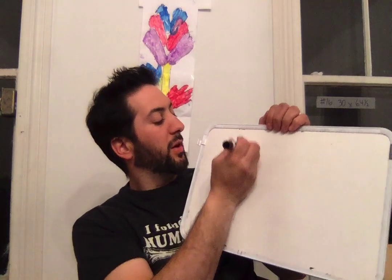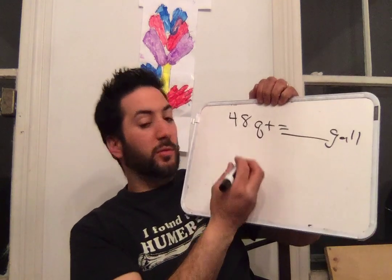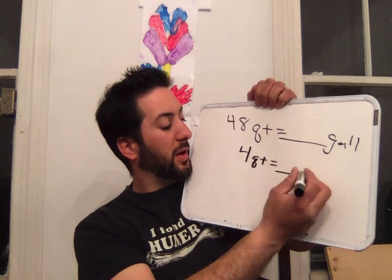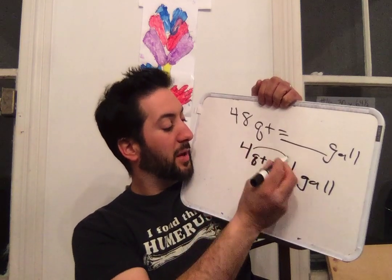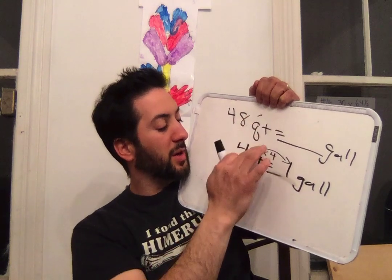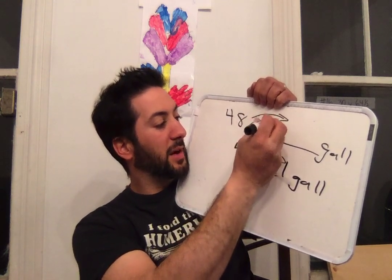Number four: 48 quarts equals blank gallons. This is quarts and gallons — the magic number is four quarts equals one gallon. You have 48 quarts equals blank gallons. Four quarts equals one gallon. How do you get from here to here? You divide by four. So 48 divided by four is 12.